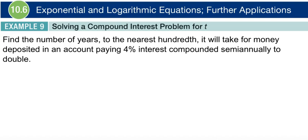In this example, we're going to be talking about solving for our time as our interest is going to be occurring over some kind of time here. So check out this problem. We want to find the number of years to the nearest hundredth that it'll take for money deposited into an account paying 4% interest compounded semi-annually to double. How long is it going to take to double? That's what they're asking. So we need to solve for T.